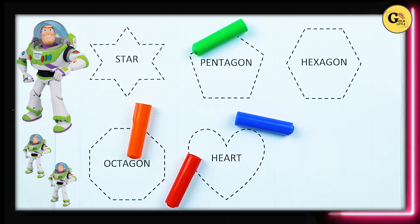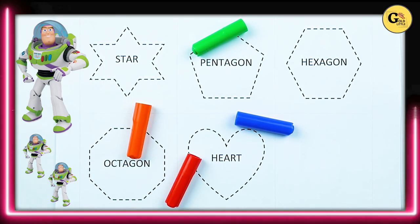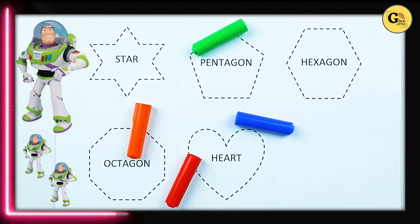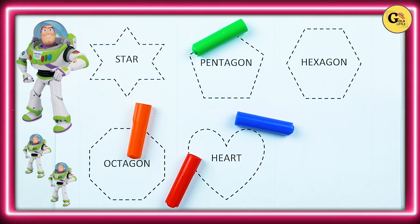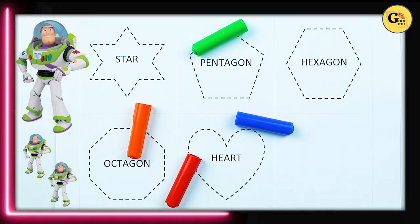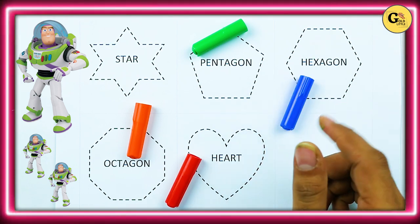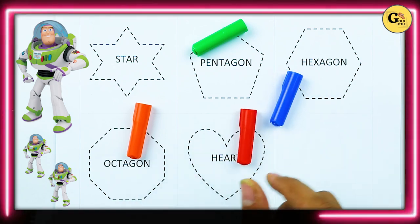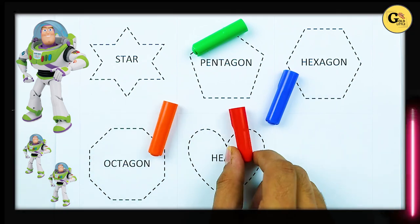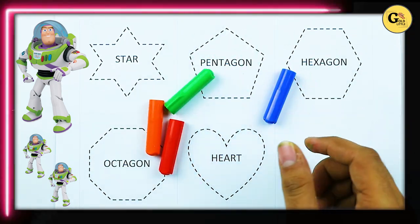Hello friends, today we learn shapes: star, pentagon, hexagon, octagon, and heart with colors. Blue color, orange color, red color, green color.